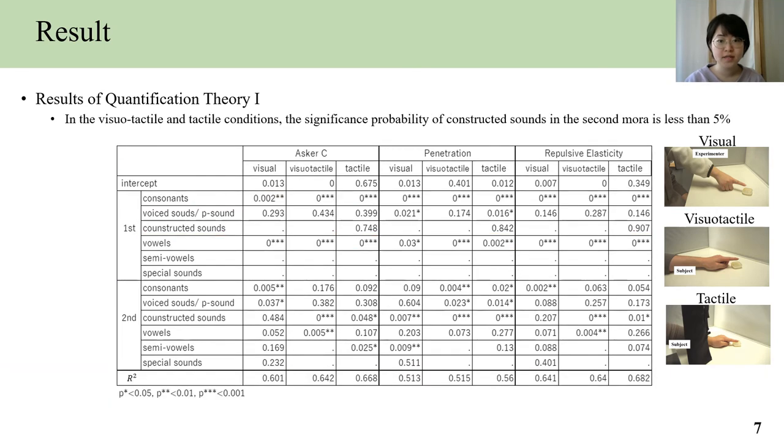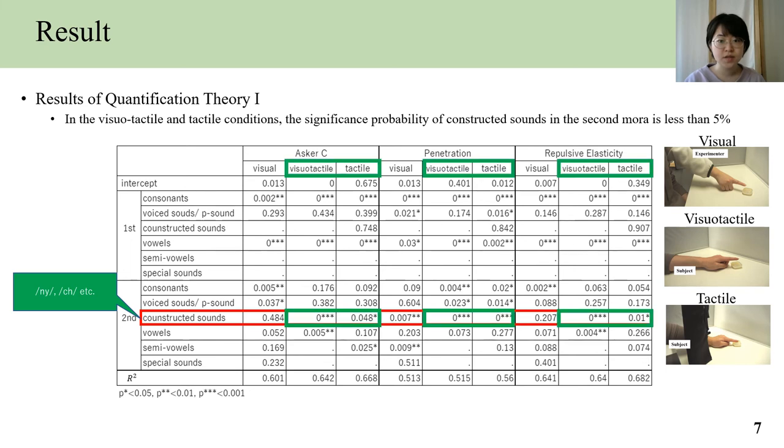We found that there are subtle differences between the conditions. For example, in the visual-tactile and tactile conditions, the significance probability of consonants in the second mora is less than 5%.